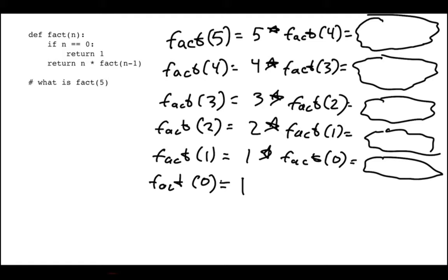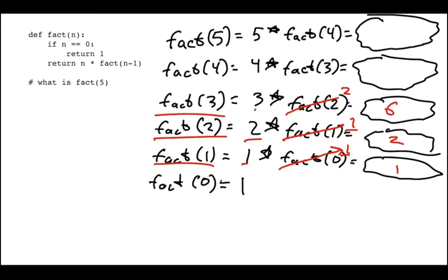My last case: factorial of 0. Looking up at the code, in that case I just return 1 — that was my base case — so factorial of 0 equals 1. Now we can unwind. I know factorial of 0, so factorial of 1 is 1 times 1, which is 1. Factorial of 2 is 2 times 1, which is 2. Factorial of 3 equals 3 times 2, which is 6. Factorial of 4 equals 4 times 6, which is 24. And finally I can answer my original question: factorial of 5 is 5 times 24, which is 120.